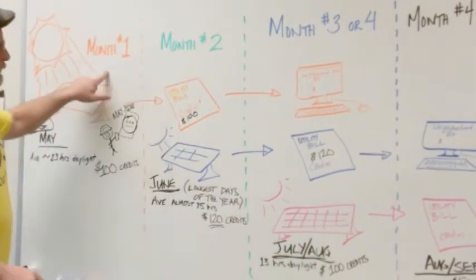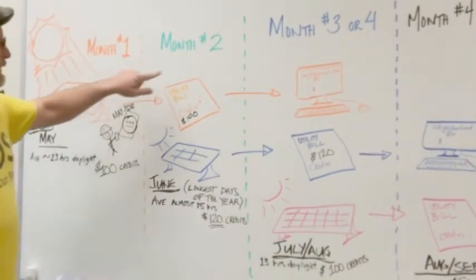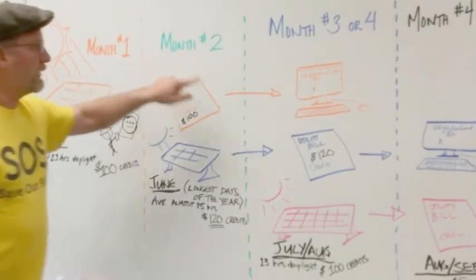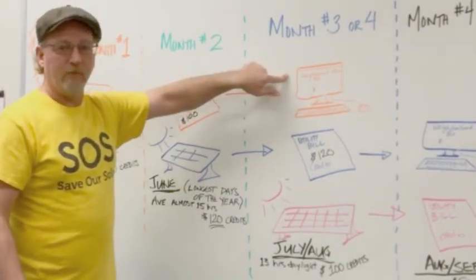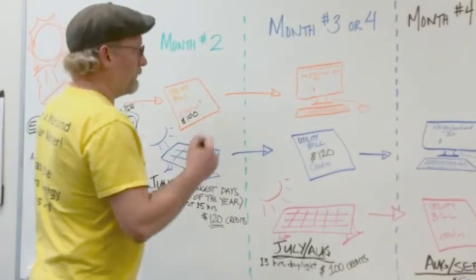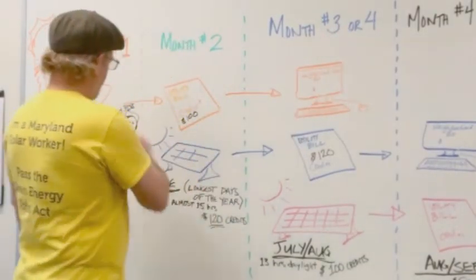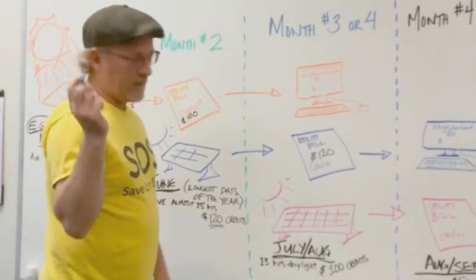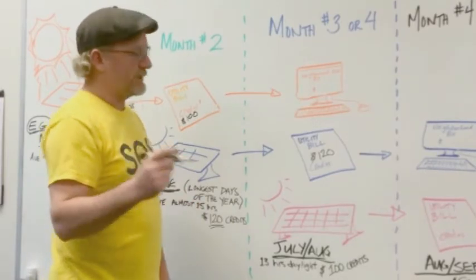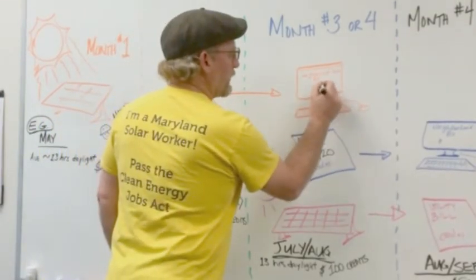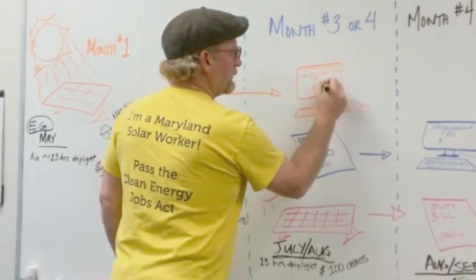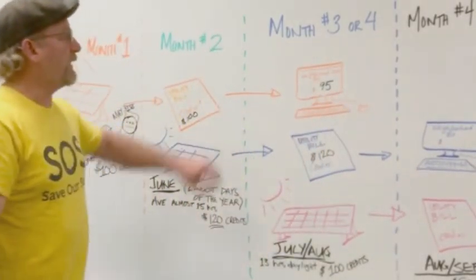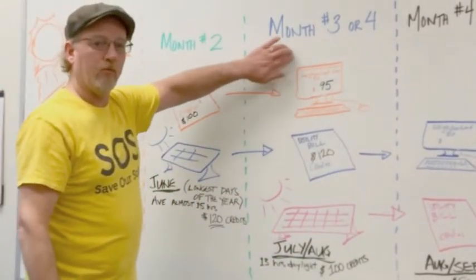Those $100 credits that were generated in month number one, issued in month number two, aren't going to show up as a Neighborhood Sun bill until month number three or four. Now as $100 in credits, let's just say you're getting a 5% discount. That means your Neighborhood Sun bill is going to be $95 in month number three or month number four.